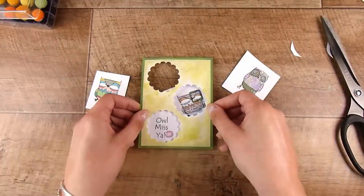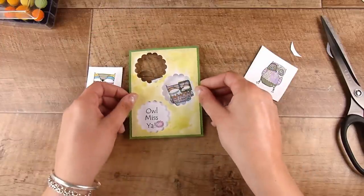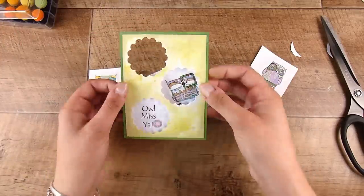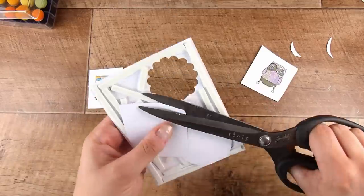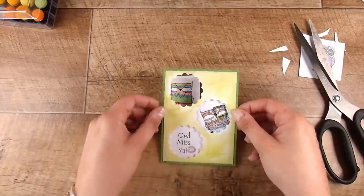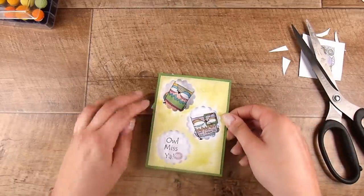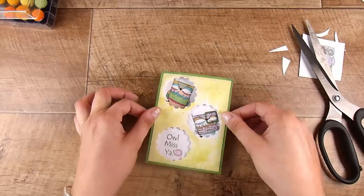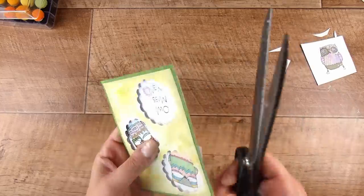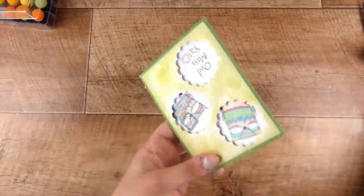In the bottom here I'm going to have the sentiment, and then I actually only need two of these owls. I wanted them at these cute little angles and this card came together pretty quickly. If I'd used pattern paper for the front it would have come together even more quickly, but I enjoy creating some paper.